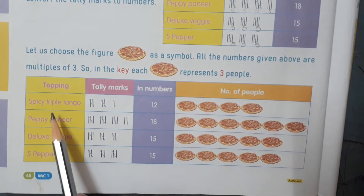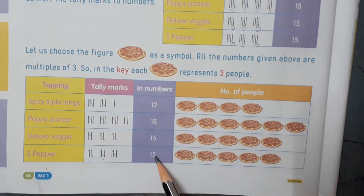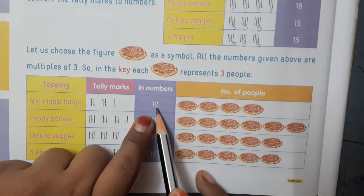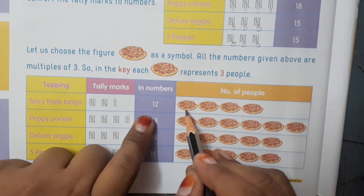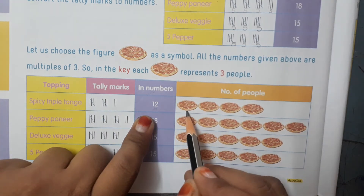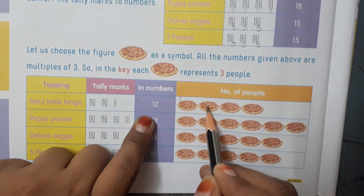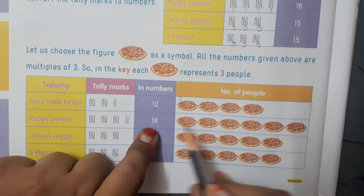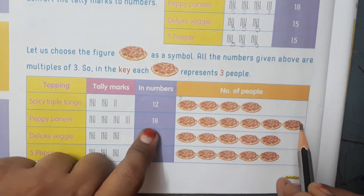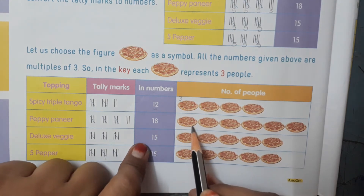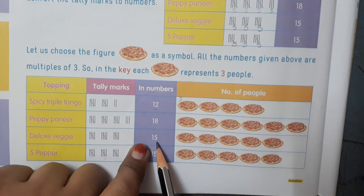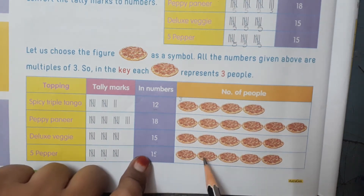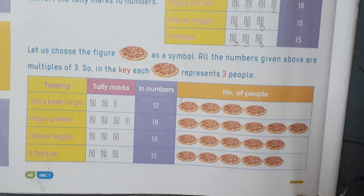These are the types of pizza, tally marks, and numbers. For twelve people, draw four pizzas — four threes are twelve. For eighteen people, draw six pictures — six threes are eighteen. For fifteen people, draw five pictures — five threes are fifteen. The last row, fifteen, also has five pizzas.